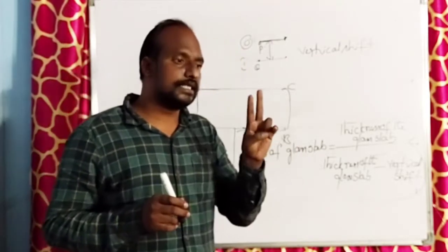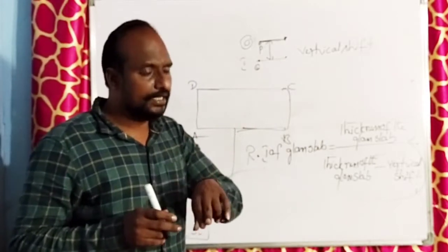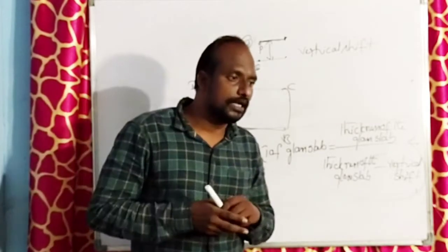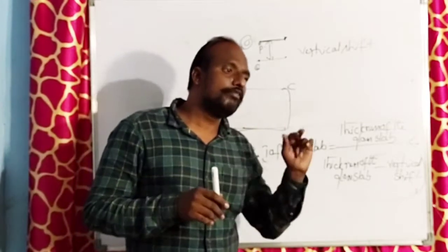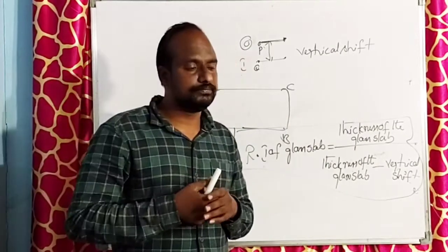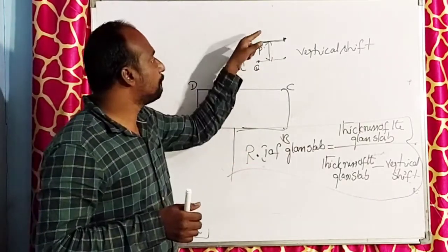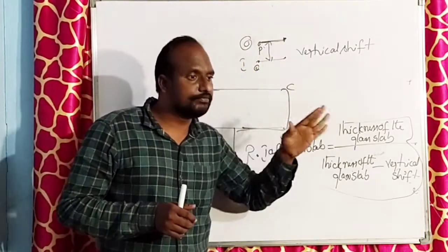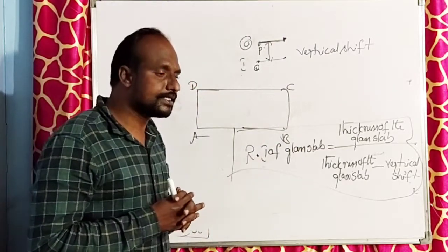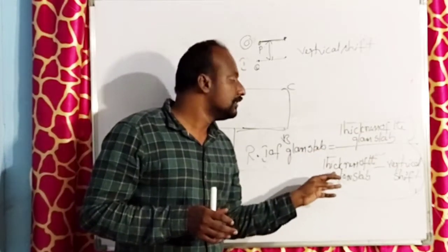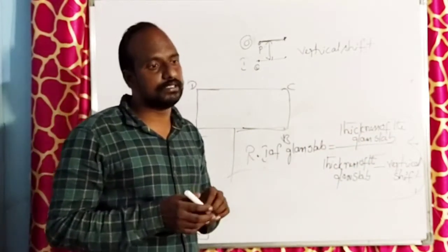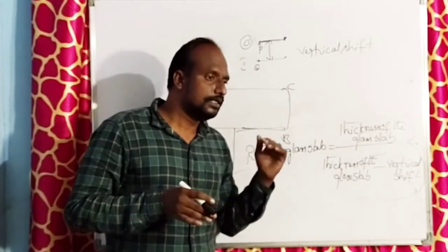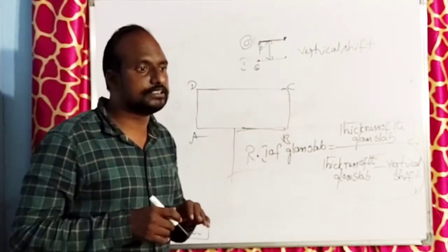What is called lateral shift? The distance between the incident ray and the emergent ray is called lateral shift. What is the angle of deviation for a glass slab? Zero. What is called vertical shift? The perpendicular distance between the object and the image is called vertical shift. The formula for refractive index of a glass slab: thickness of the glass slab divided by thickness of the glass slab minus vertical shift. Also, N1 sine A equals N2 sine A — this is the refraction of light at a plane surface.